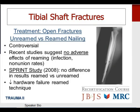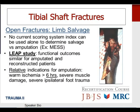Regarding open fractures and limb salvage: there is no current scoring system that determines whether a mangled extremity should be salvaged or amputated. The LEAP study — another important multicenter prospective orthopedic trauma trial — showed similar functional outcomes for amputated and reconstructed patients. Relative indications for amputation include warm ischemia greater than six hours, severe muscle damage, or severe ipsilateral trauma to the foot.